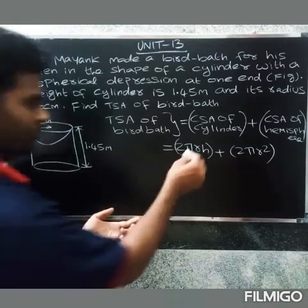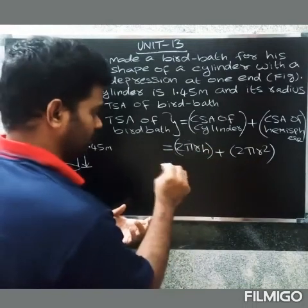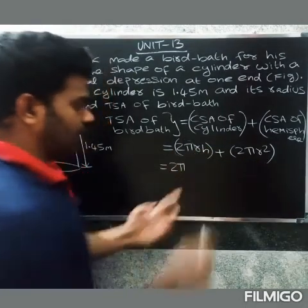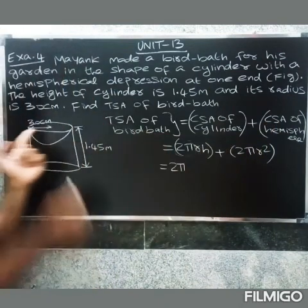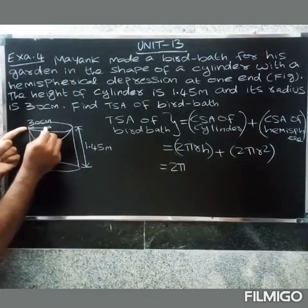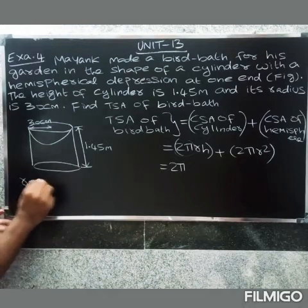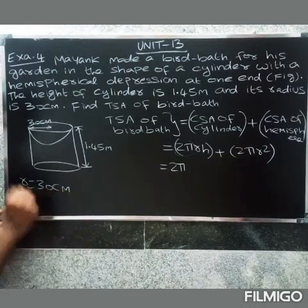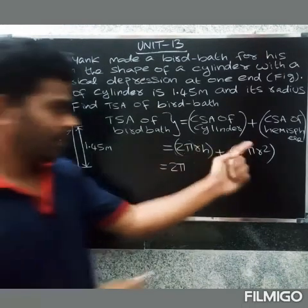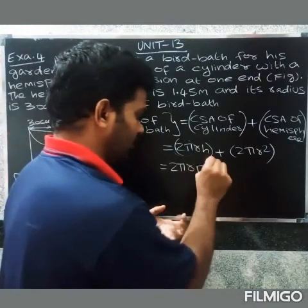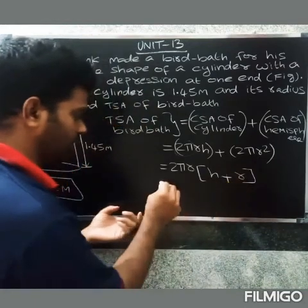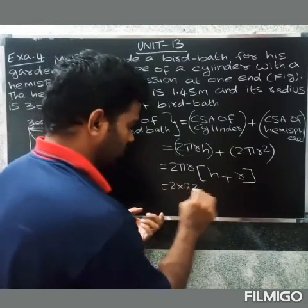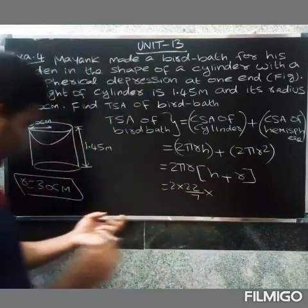Here radius of cylinder and radius of hemisphere are the same - both have common radius r of 30 centimeters. So we can factor out, and the remaining is h plus r. So 2 × 22/7 × radius 30.